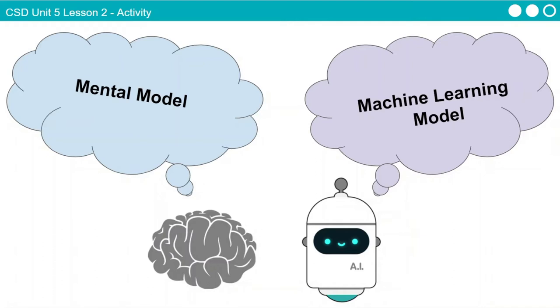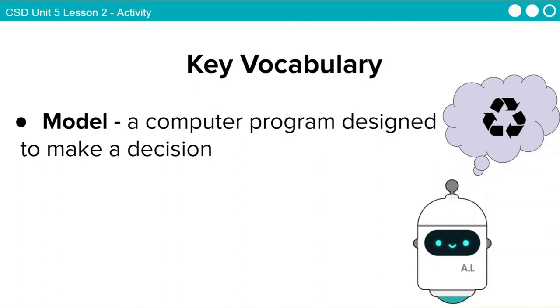In our last lesson, we helped AIBot develop a model for deciding whether something is a fish or not. Here's another key vocabulary word for this unit, model, a computer program designed to make a decision.